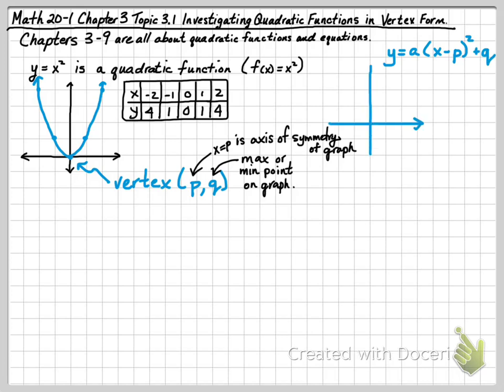Y equals A times X minus P squared plus Q is the equation of a quadratic function in vertex form, where PQ is the vertex. For instance, if the vertex of this parabola is at the point 2, 1. You can see the bottom point is that X is 2, Y equals 1. Then the equation would be X minus 2 squared plus 1, because P is 2 and Q is 1.